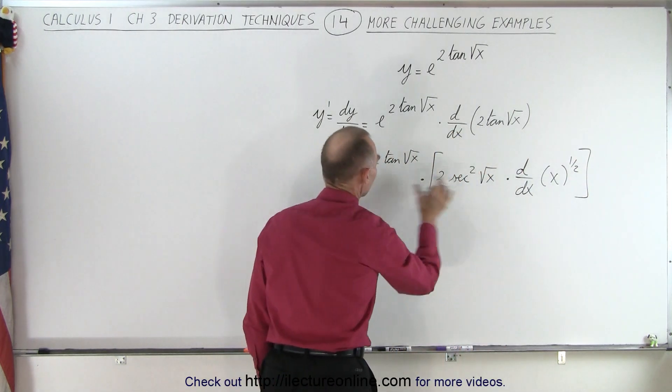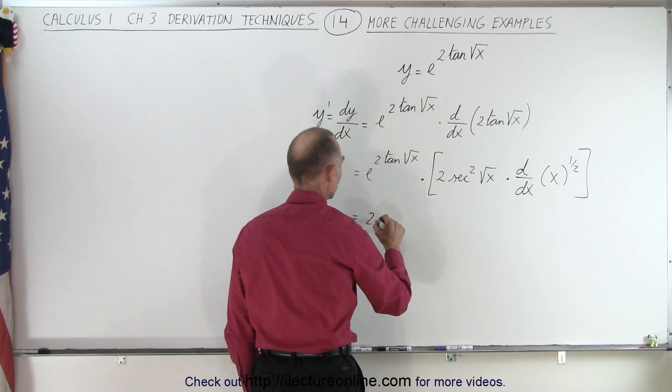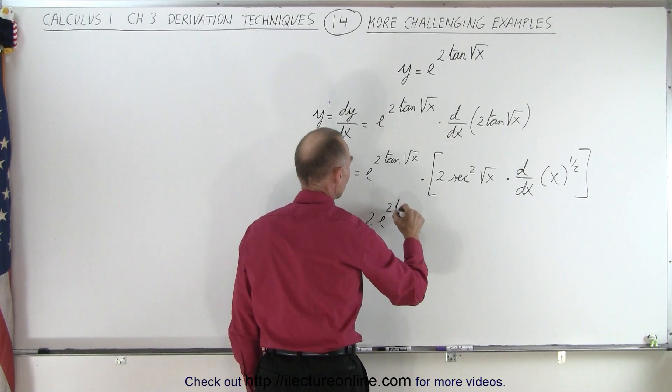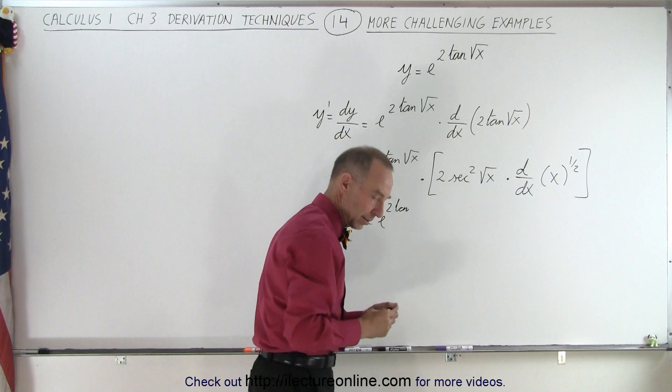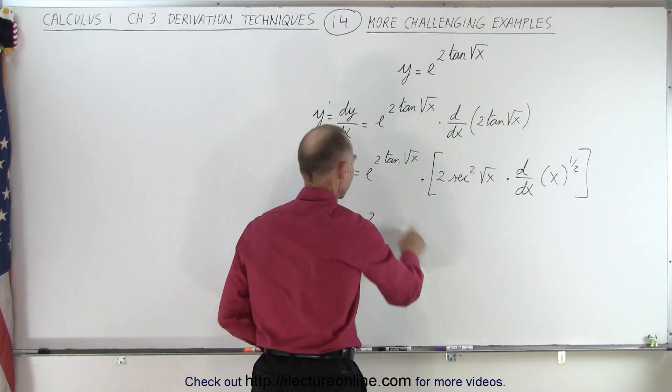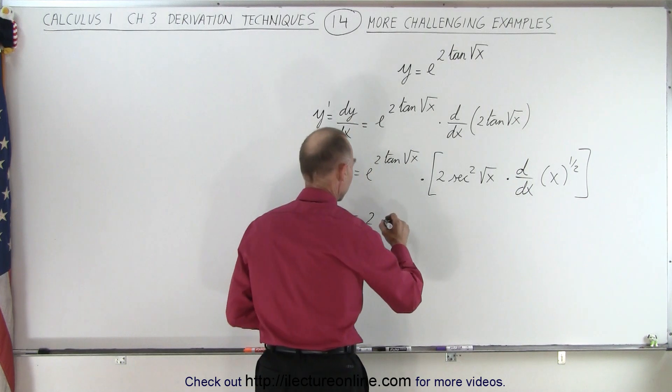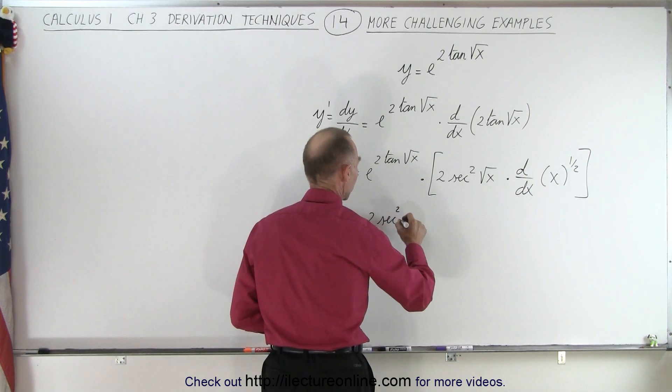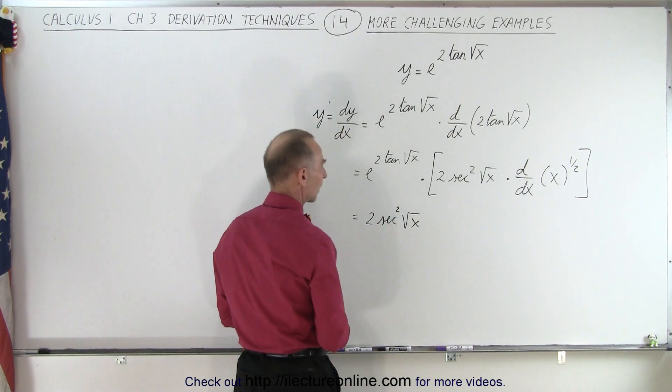So then, we can already put this in the front. So this is equal to 2 e to the 2 tangent. Wait a minute, I was going to put the whole thing in the front. There's a whole factor there. Let's do that. So we write 2 times the secant square of the square root of x, like that,